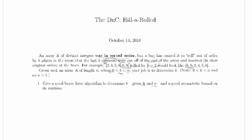So we want to figure out how many elements have been rolled. If we were scanning through this array, for example 8, 9, 2 — as soon as we drop from 9 to 2, we know that we've found our roll point.